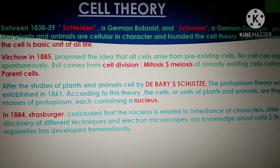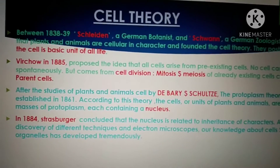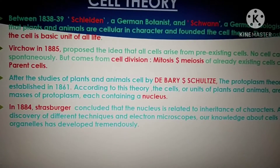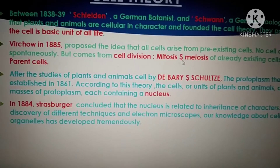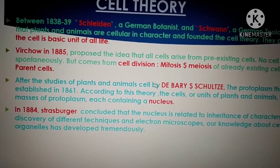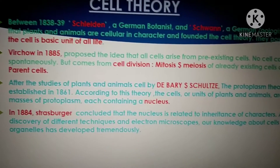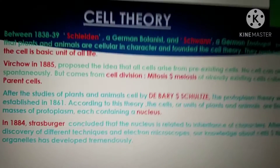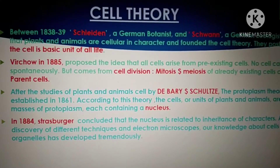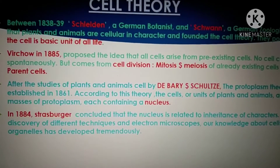After studies of plant and animal cells by de Bary and Schleiden, the protoplasm theory was established in 1861. According to this theory, the units of plants and animals are tiny masses of protoplasm, each containing a nucleus. These scientists proposed the theory mainly about the living content inside the cell. We will discuss cell structure and functions in detail in many more lecture parts, as it is a very vast and interesting topic.